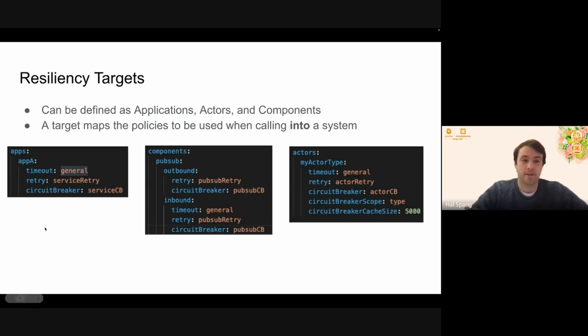So first we have apps, and we have just an example here, app A. So this means that when any application calls into application A, including itself, if application A called its own method, it would be using these policies. So it would have a general timeout, the retry be service retry, and the circuit breaker would be service circuit breaker. None of those are defined here. But that's basically how this is going to work out is that you would expect in your resiliency policy to find a timeout named general, a retry named service retry, a circuit breaker named service circuit breaker.